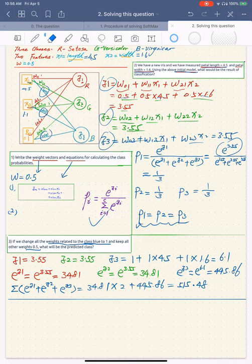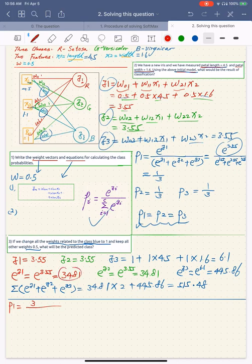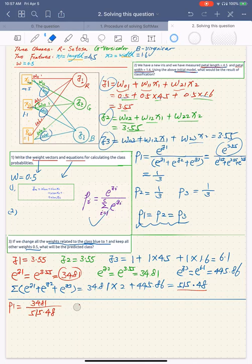Right now we can calculate the probability of each class, so P1 equals to 34.81 over 515.48, so 6.75%.